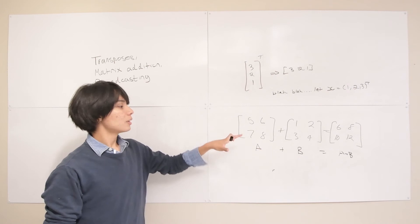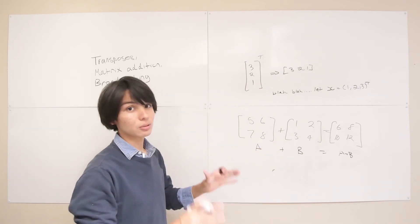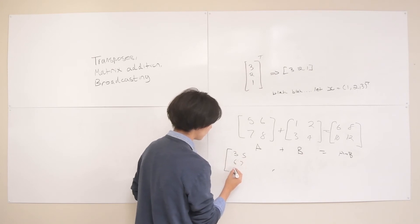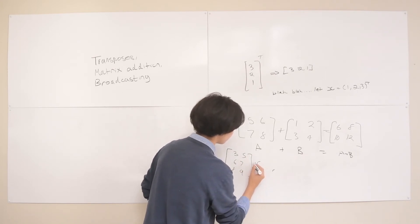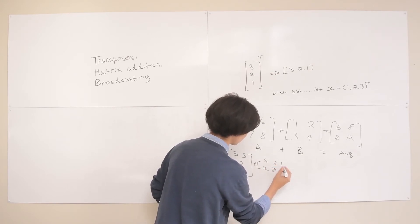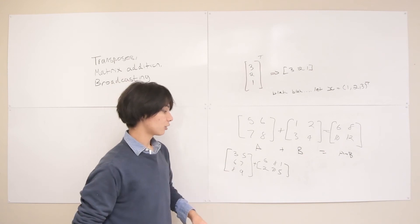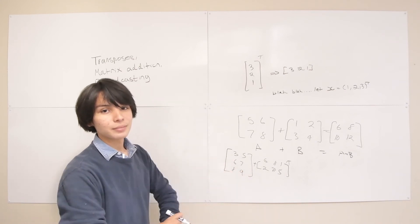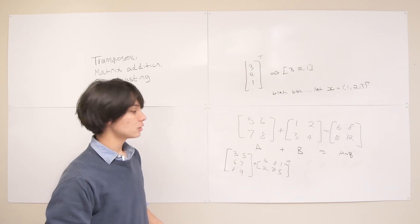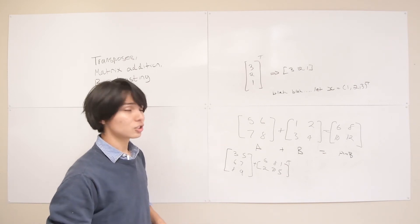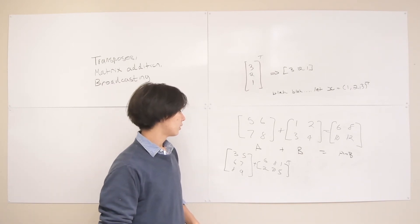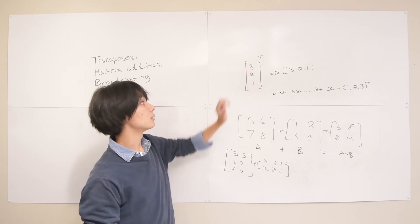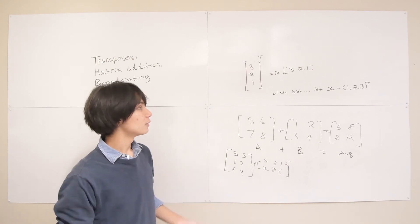The same applies to rectangular matrices — you just need to make sure they're the same shape. This is where transposes often come in. If you have a 3 by 2 matrix and a 2 by 3 matrix, you can't add them directly, but if you transpose one of them they become the same shape and you can add them. Those kinds of shape manipulations come up very often in machine learning. The same rule applies to vectors — they have to be the same length, then you just add element-wise.